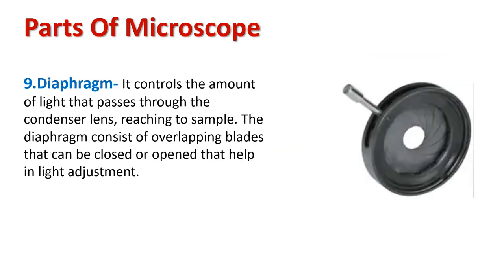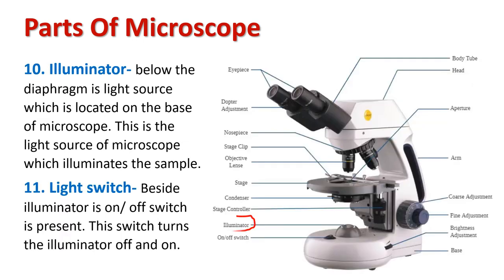Below the condenser is the diaphragm. It controls the amount of light that passes through the condenser lens and reaches the sample. The diaphragm consists of overlapping blades that can be closed or opened. This feature helps in light adjustment.